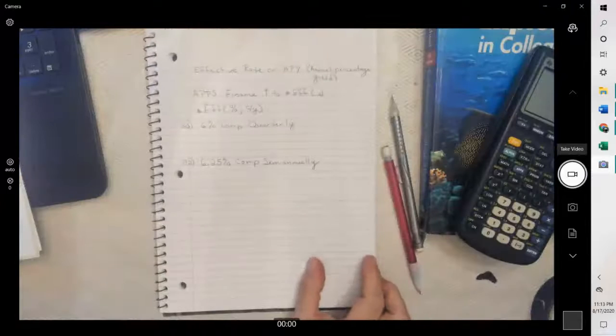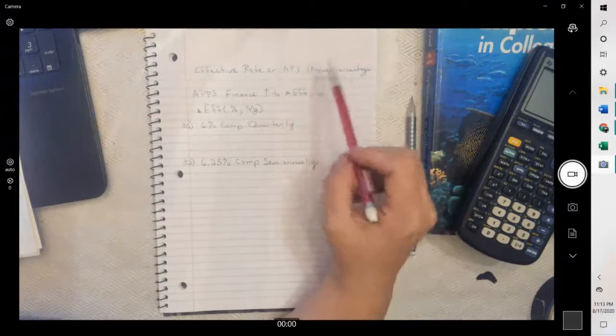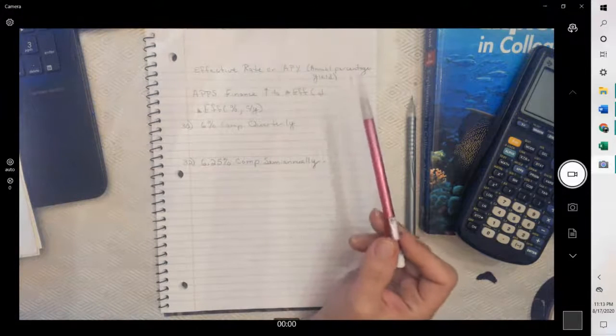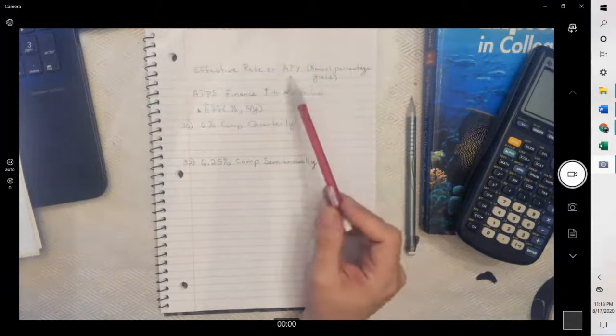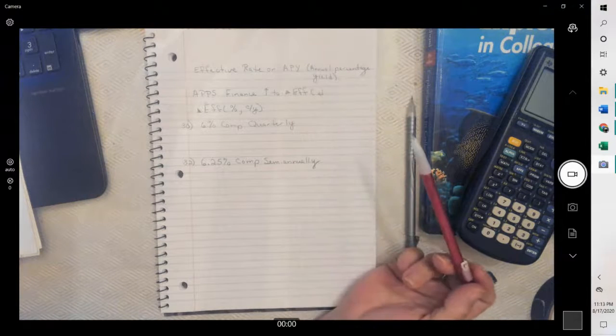So when we're talking about effective rate or annual percentage yield, your book uses effective rate. My lab uses APY or annual percentage yield, but they're the same thing.